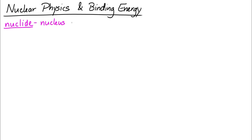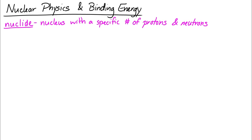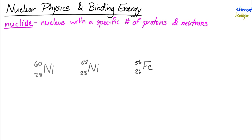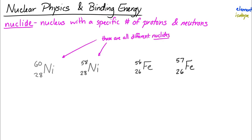Let's take a look at nuclear physics and binding energy. To begin with, we're going to introduce a vocabulary word: nuclide. A nuclide is a nucleus with a specific number of protons and neutrons. To show how this word differs from element and isotope, I'm going to write down four different nuclei: nickel-60, nickel-58, iron-56, and iron-57. These four are different nuclides.